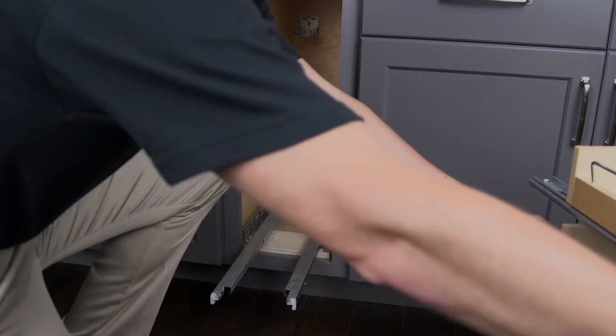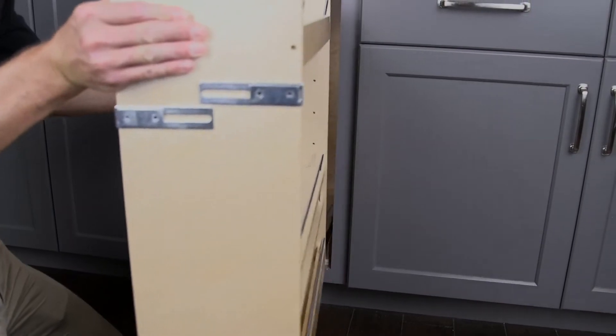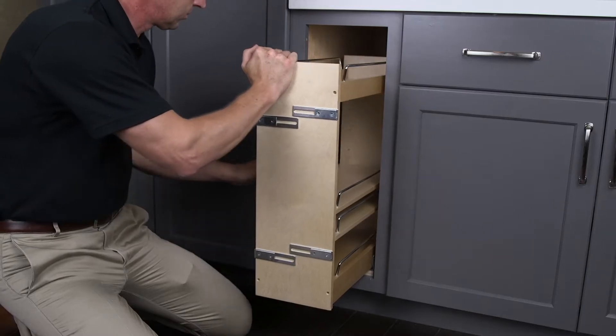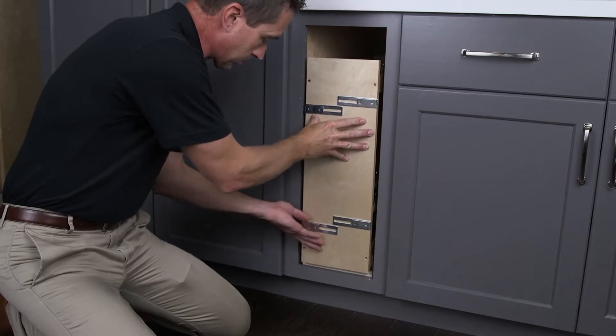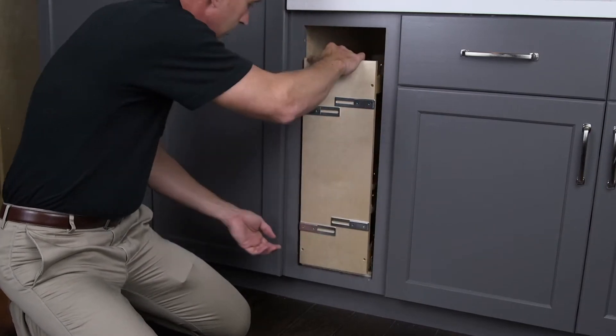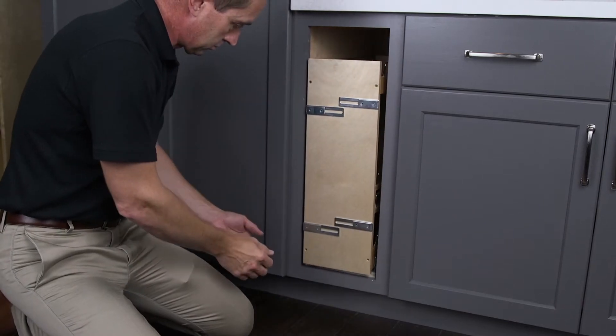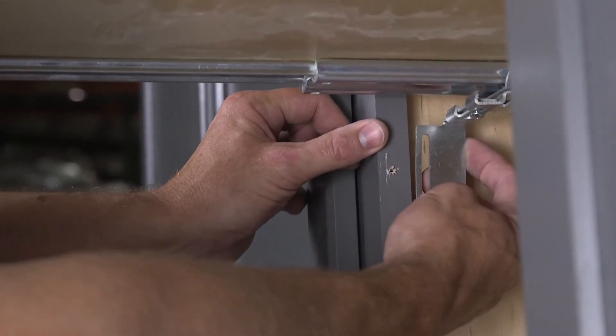Reinstall the pullout onto the slides, making sure as you push it slowly backwards that the upper slide is seated properly into the mounting bracket. Push the pullout all the way into the cabinet, making sure the clips lock into the undermount slides. Operate the unit to make sure the undermount slides are working properly.